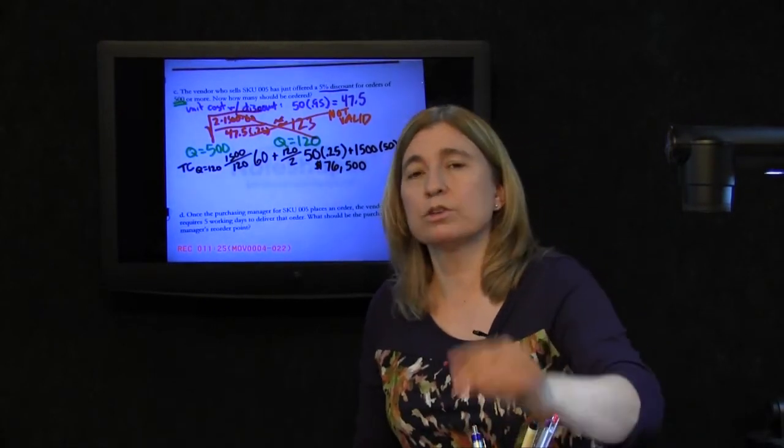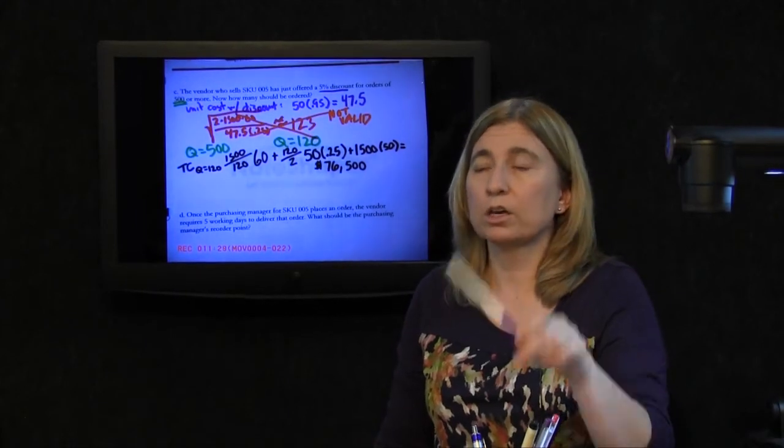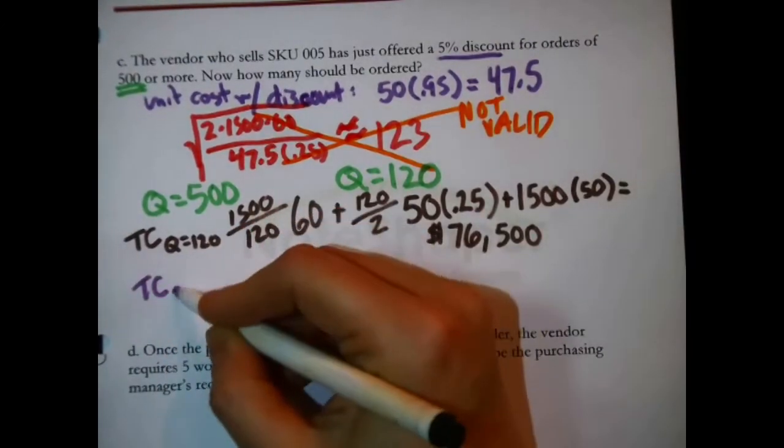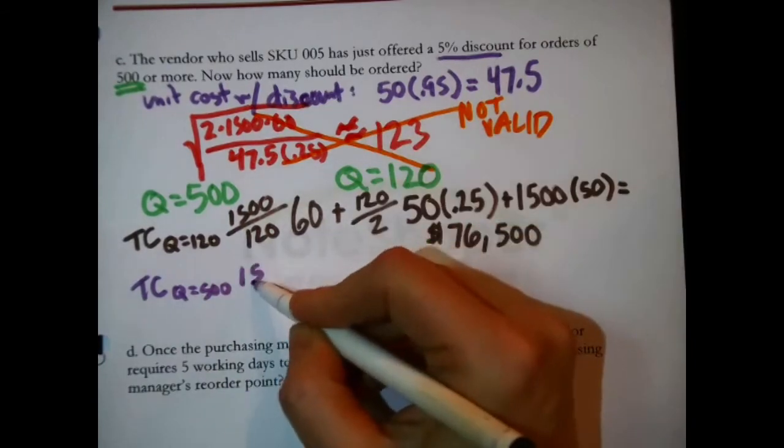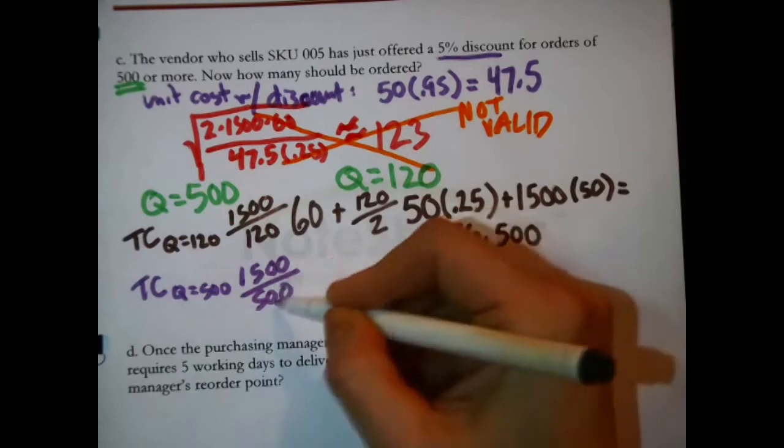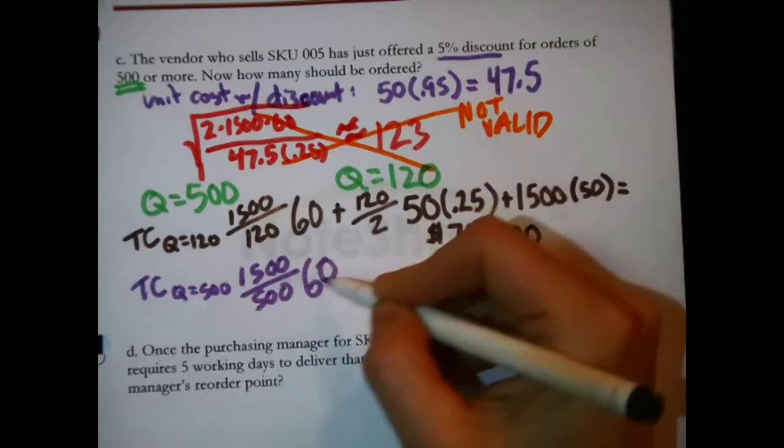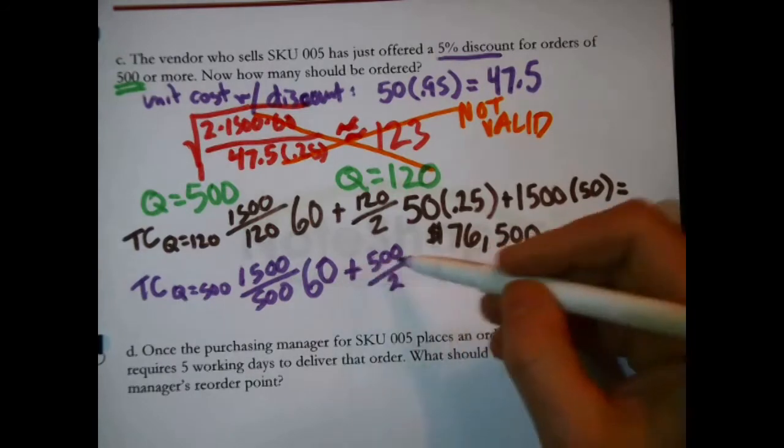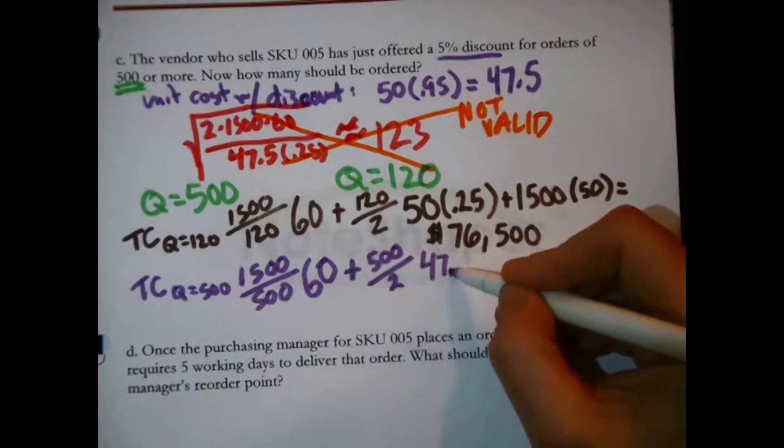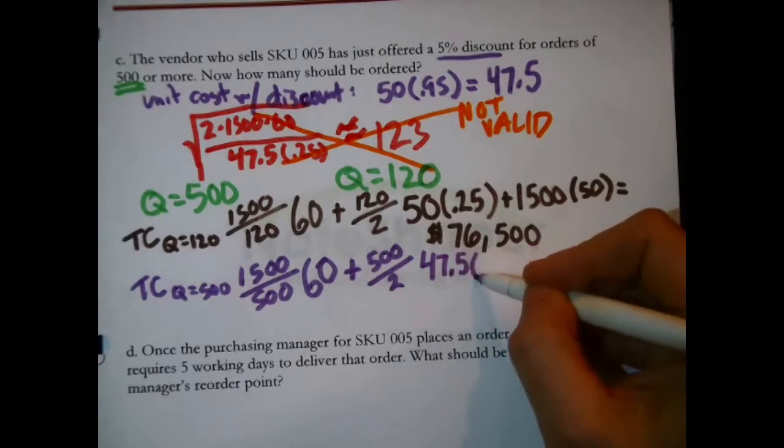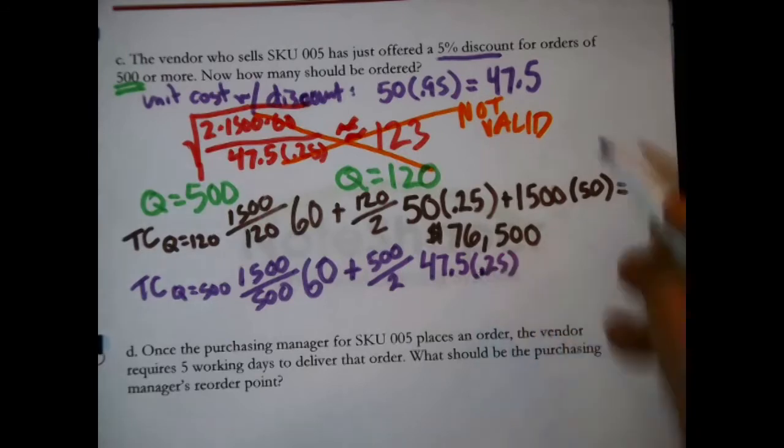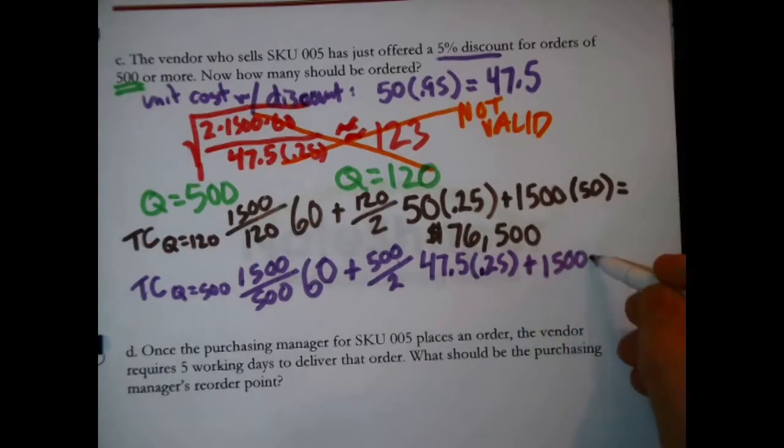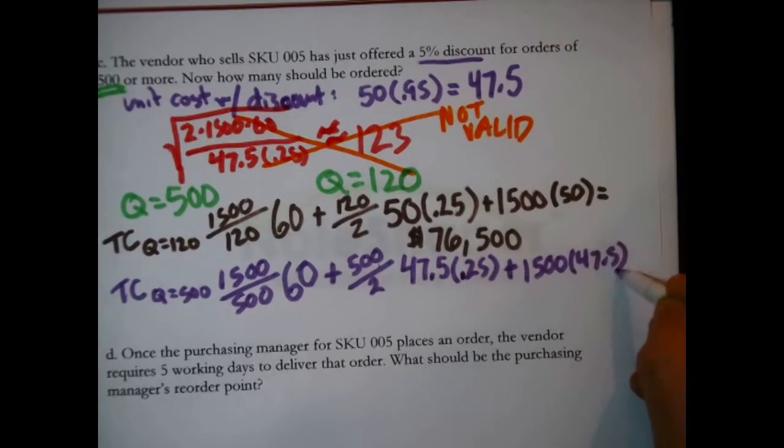Let's see how that compares to the opportunity to, this might be the answer, it might not, the opportunity to order them just 500 at a time. Same steps. Q equal 500. So if we order them 500 at a time, 1500 divided by 500, we're only going to order like three times a year. But we'll pay $60 each time we do it. Plus, the average inventory will be higher. It'll be 500 divided by 2. That will be times, now what's the H in this scenario? Each unit will cost us $47.50. And the H is 25% of that, so we want to say that times that. That's the holding cost. Plus, 1500 times 47.5. That's the purchasing cost.